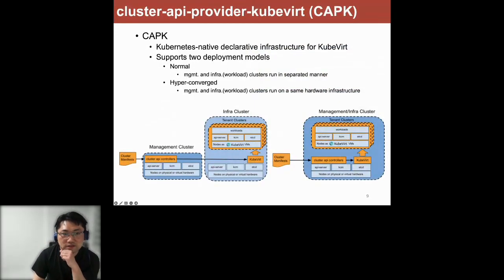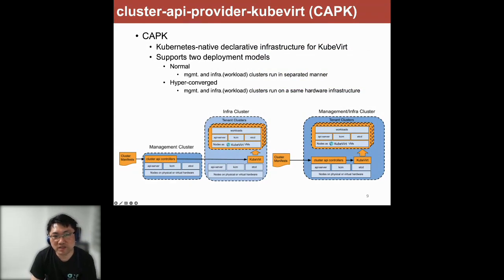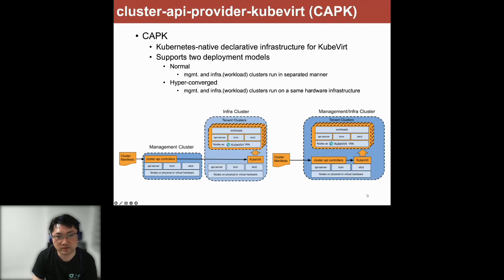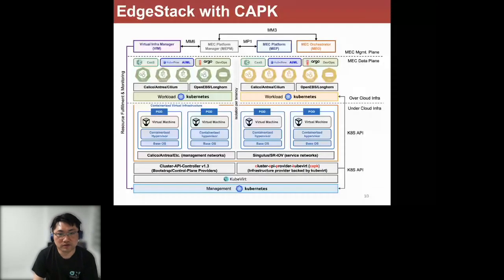KK is the current state of the cloud infrastructure for KubeVirt and supports two deployment models. The first is the normal model, where the management and infrastructure clusters run separately. The second is the hyperconvergence model, where management and infrastructure reside in the same cluster. Due to resource consumption issues, MEC deployments will typically use the hyperconvergence model.